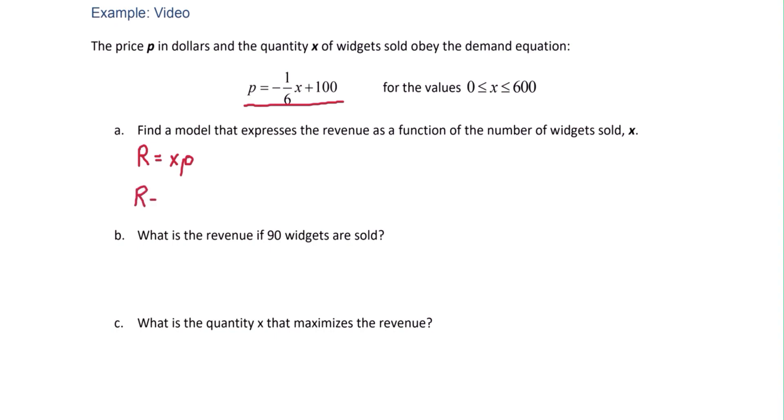So we have r equals x, replace p with negative one-sixth x plus 100. And then if we simplify this, we get r of x equals negative one-sixth x squared plus 100x. We now have revenue as a function of x.